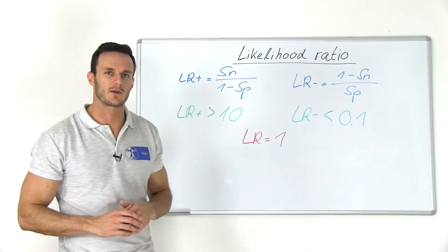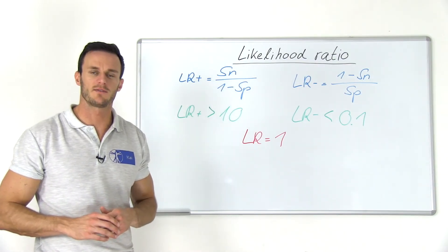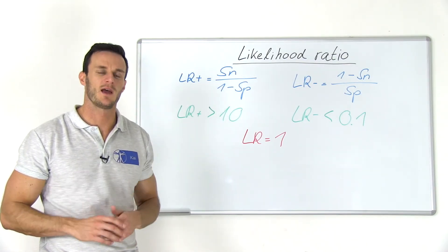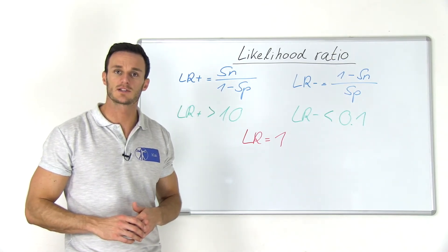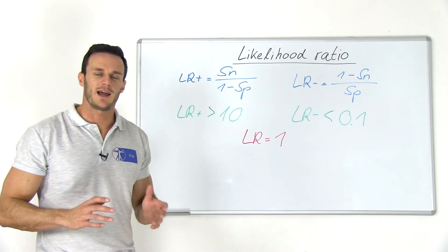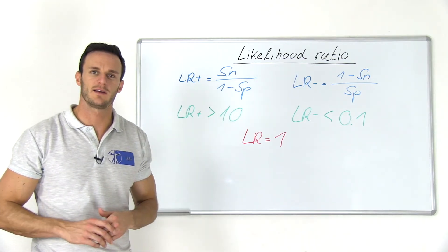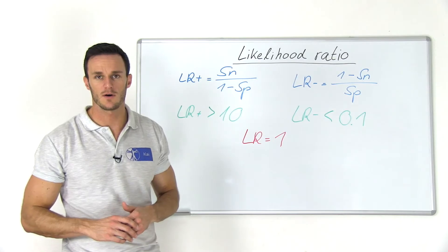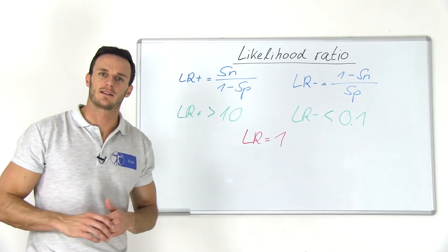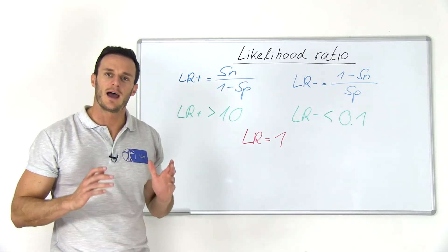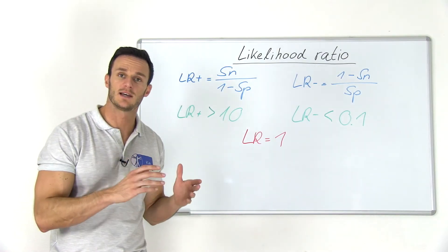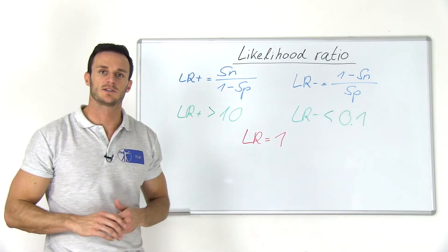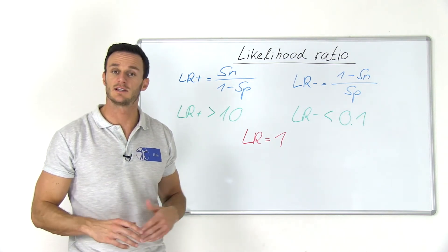We are talking about a good positive likelihood ratio if the value is bigger than 10 and we are talking about a good negative likelihood ratio if the value is smaller than 0.1. If the likelihood ratio positive or negative is close to 1.0, this means that this test has very little influence on the fact that the patient does or does not have the disease. So in practice such a test is thus useless.